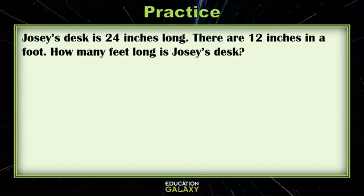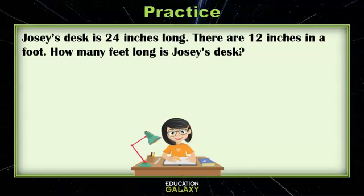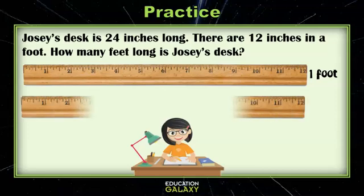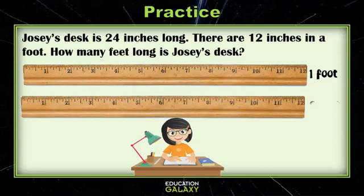Now let's practice some different types of problems. Josie's desk is 24 inches long. There are 12 inches in a foot — how many feet long is Josie's desk? There's Josie working hard at her desk. We have a ruler which is 12 inches, equal to one foot, and another ruler making 24 inches, which is another foot. So two feet long is the length of Josie's desk.